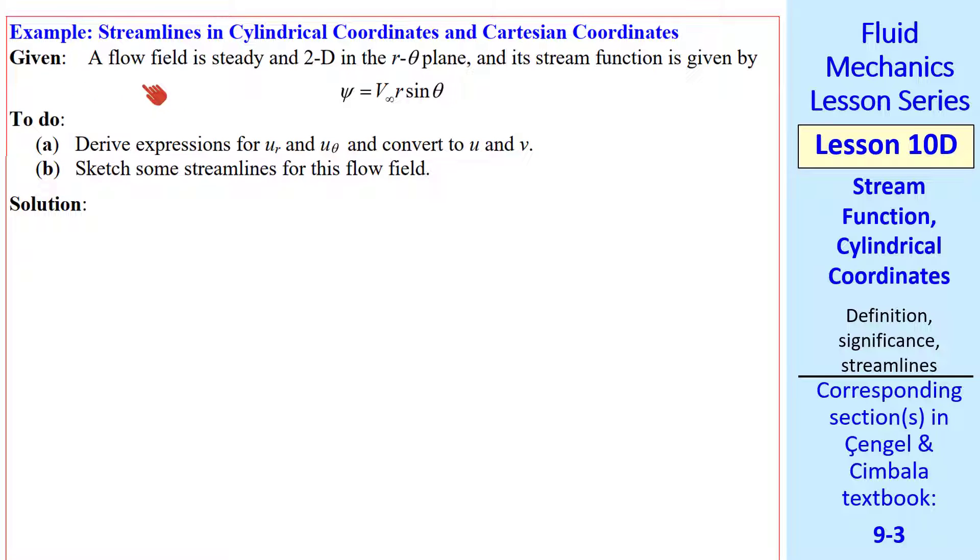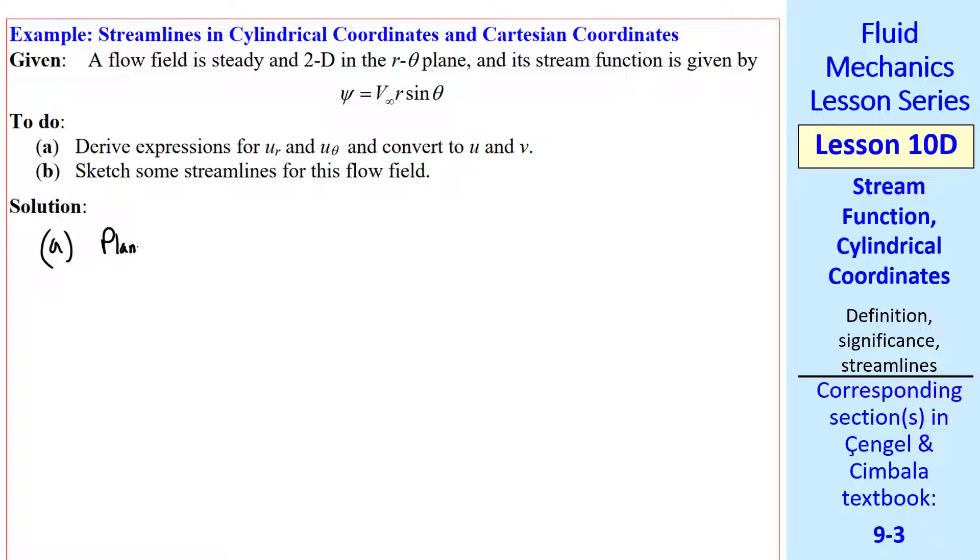Let's do an example problem. We have a 2D flow field that's steady in the R theta plane, and here we'll give the stream function. We want to derive expressions for U_R and U_theta and convert them to Cartesian coordinate velocity components. And we'll also sketch some streamlines. Since this is a planar flow, we use the appropriate equations, which we have above.